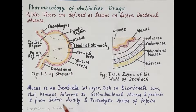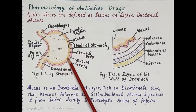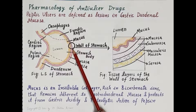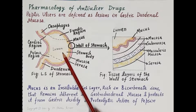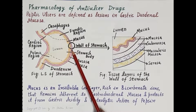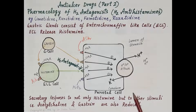This mucus gel layer protects the gastroduodenal mucosa from gastric acidity and the proteolytic action of pepsin. If this mucus gel barrier breaks down, the exposed stomach wall comes in contact with corrosive gastric acid and proteolytic pepsin, leading to digestion of the mucosa and formation of mucosal lesions and peptic ulcers.